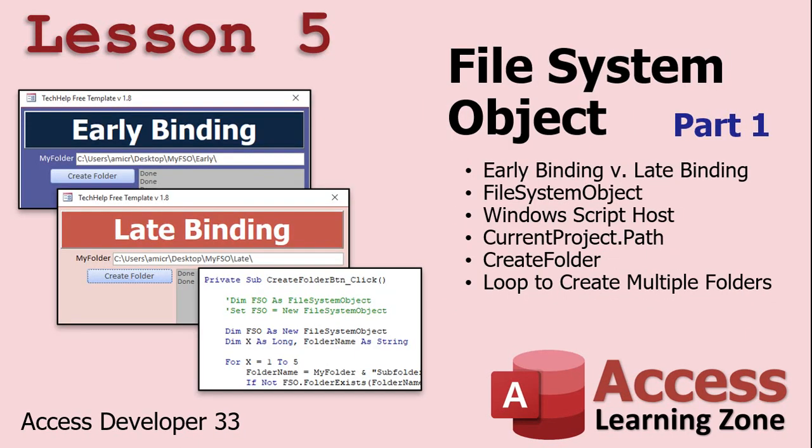In lesson five, we are returning to file I/O. We're going to start working with the File System Object. We're going to learn about early binding versus late binding, the File System Object library — the Windows Script Host. We're going to learn about the CurrentProject.Path command, which is how you figure out what folder your Access database is located in. Then we'll learn how to create a folder with the CreateFolder command, and how to loop to create multiple subfolders.